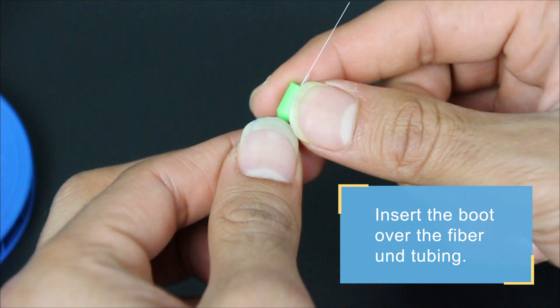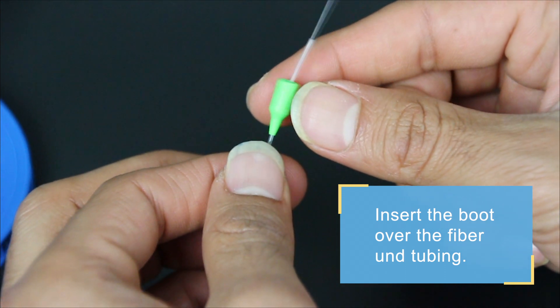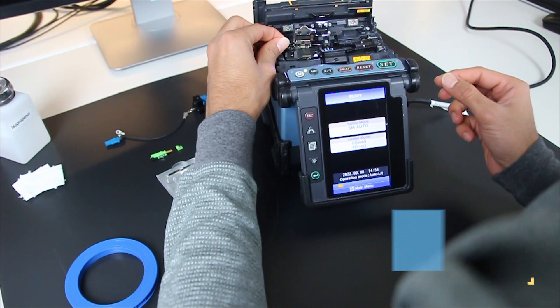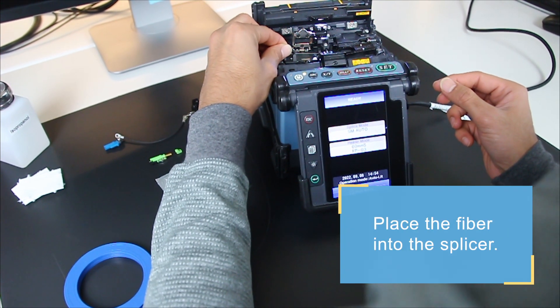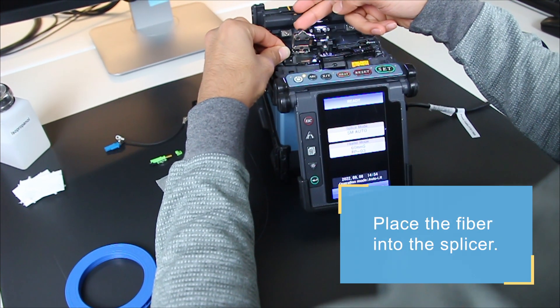First, insert the boot over the fiber and tubing. Next, place the fiber into the splicer.